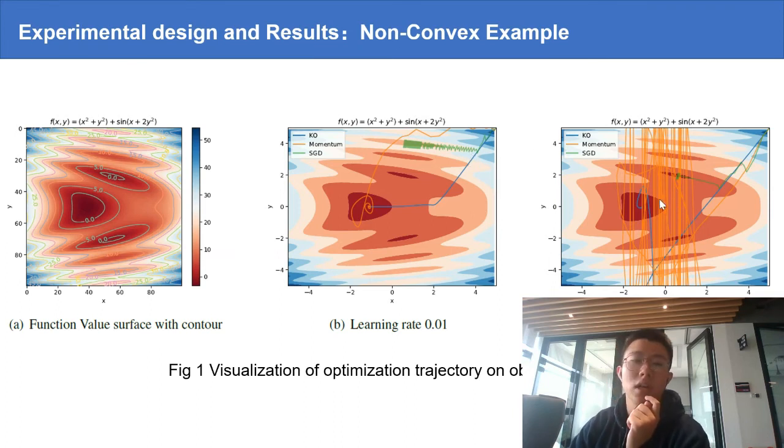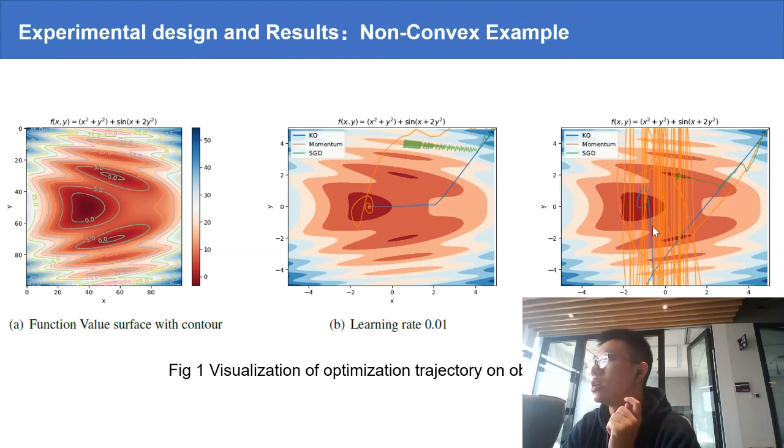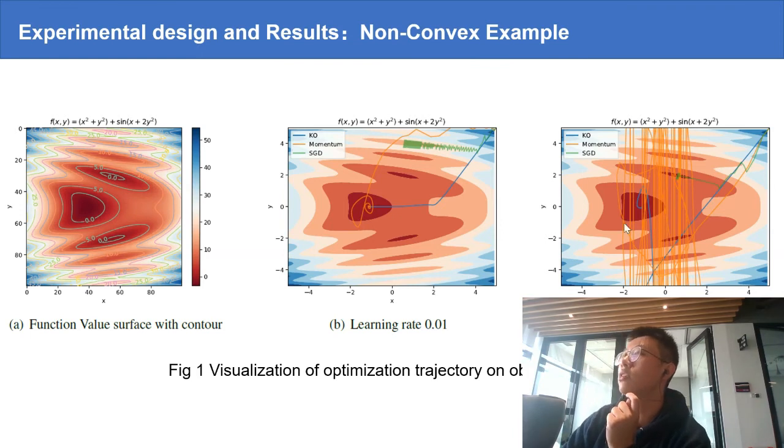For large step size, we can see that the momentum method introduces large variance in the gradient estimations, but the Kalman Optimizer gives consistent estimates of the gradient, and SGD also gets trapped in the local minimum.